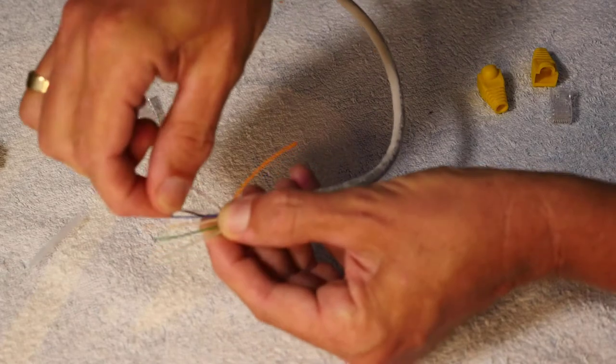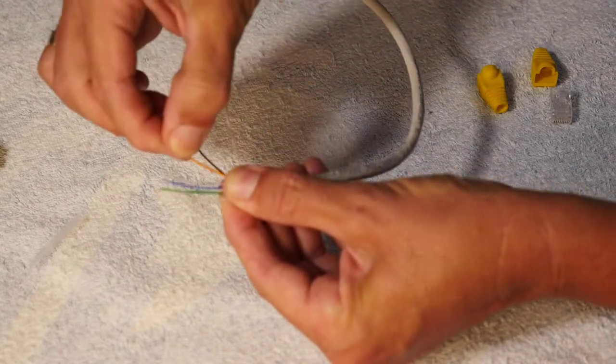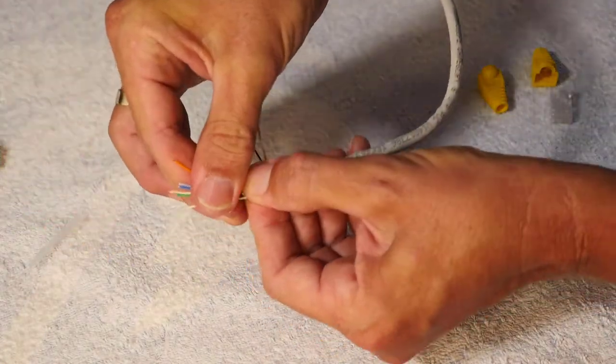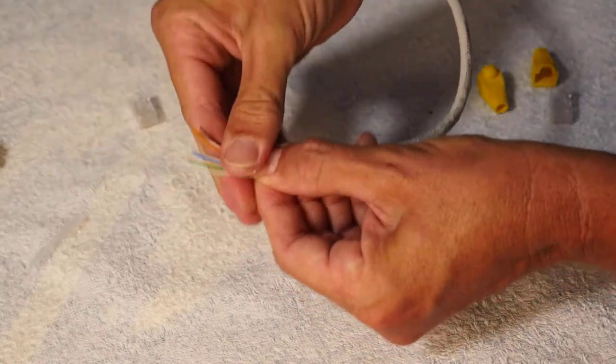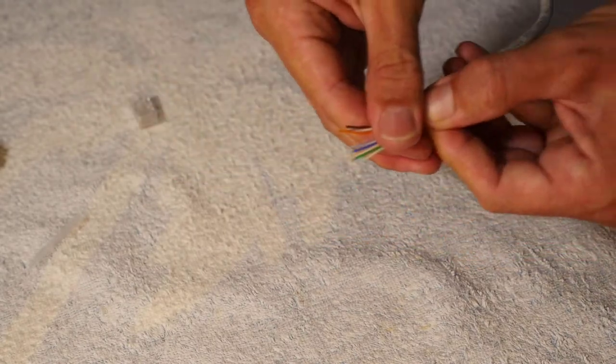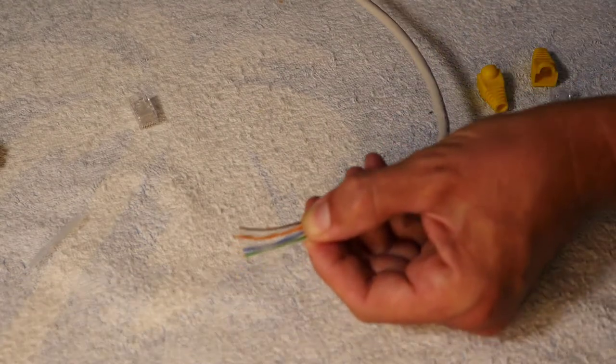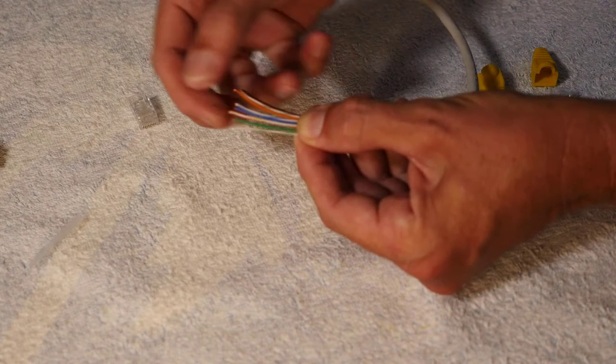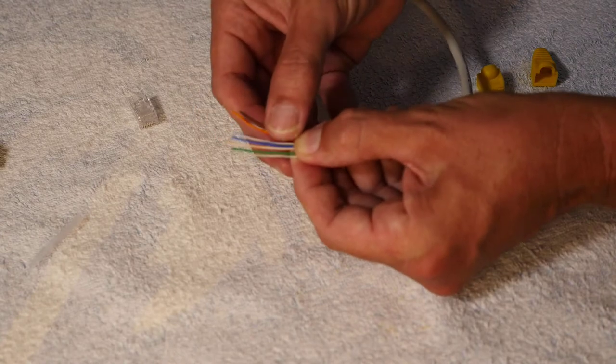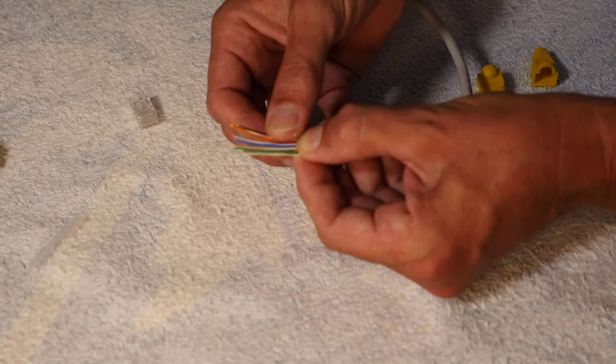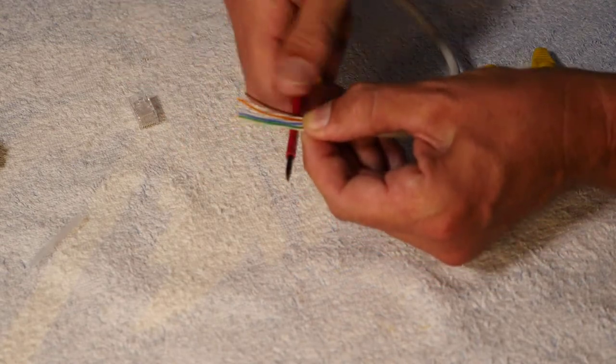Then we do the white blue, the solid orange, then the white brown, and then the solid brown. You may have realized that I've just alternated between the solid colors and the white colors. So I've gone white green, solid green, white orange, solid blue, white blue, solid orange, white brown, and solid brown. That is the standard that we use in Australia.